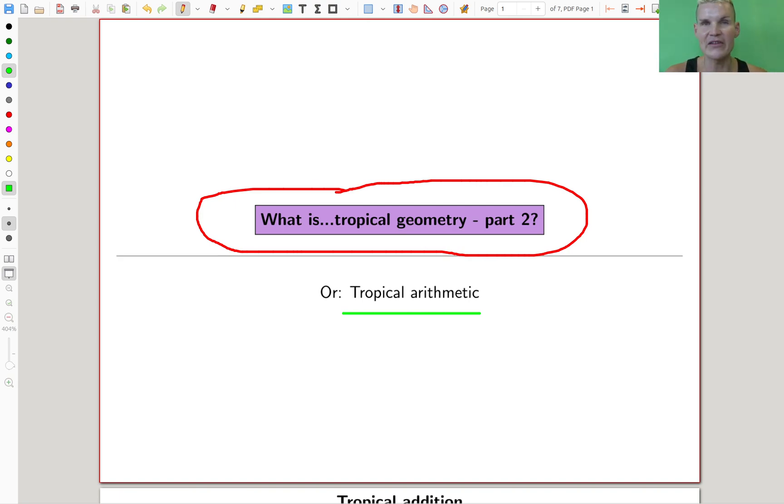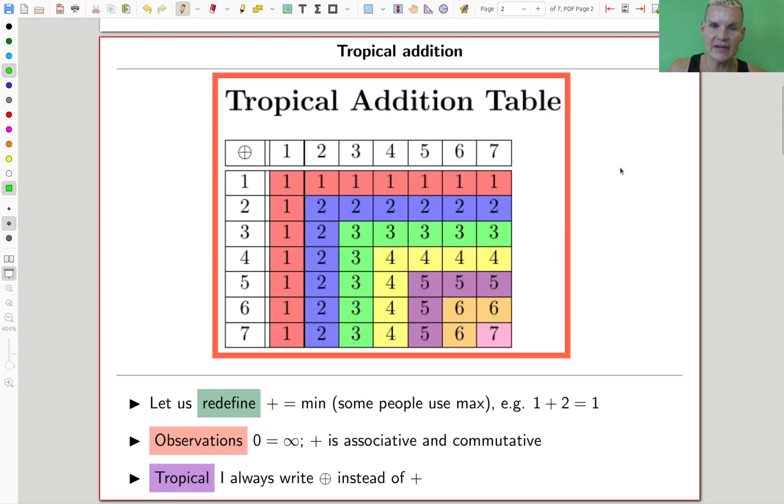You can even try to convince a non-mathematician to study tropical arithmetic. Just the name turns me on already. Very beautiful. So let's have a look at this tropical arithmetic and what it's all about. Tropical arithmetic - what is arithmetic? Arithmetic is addition and multiplication.